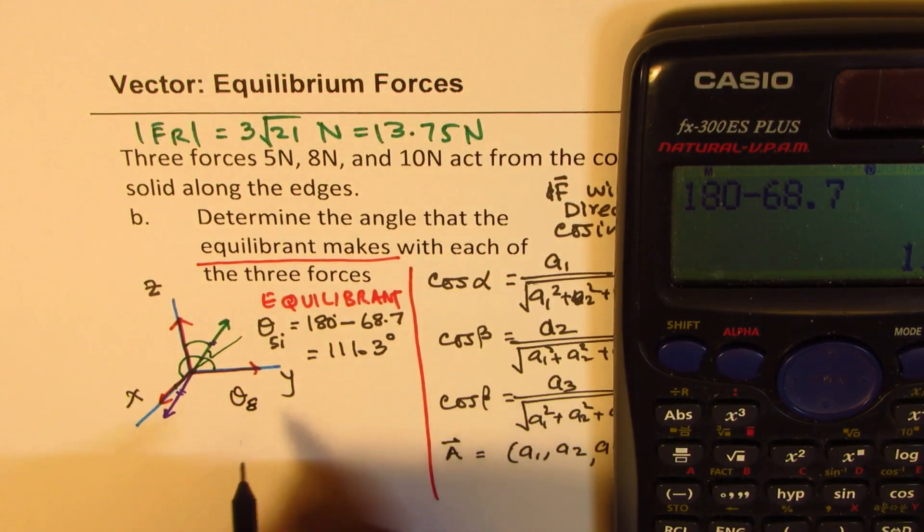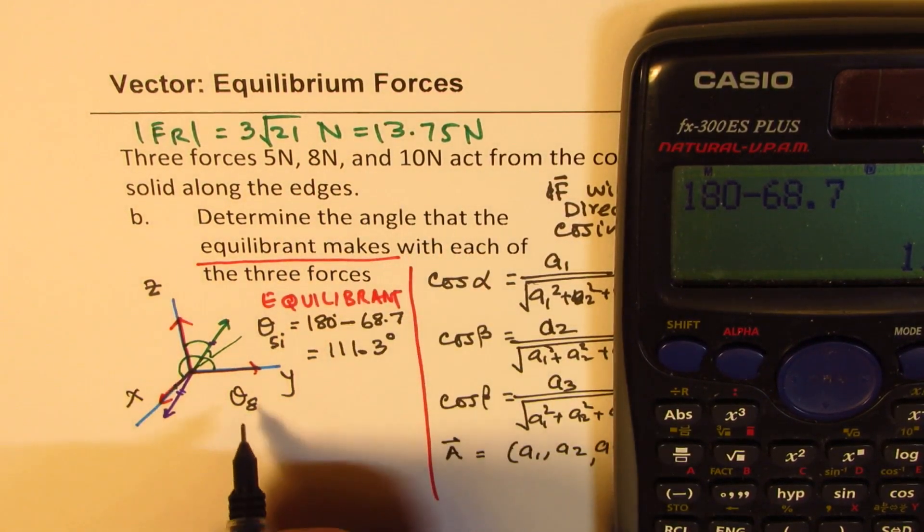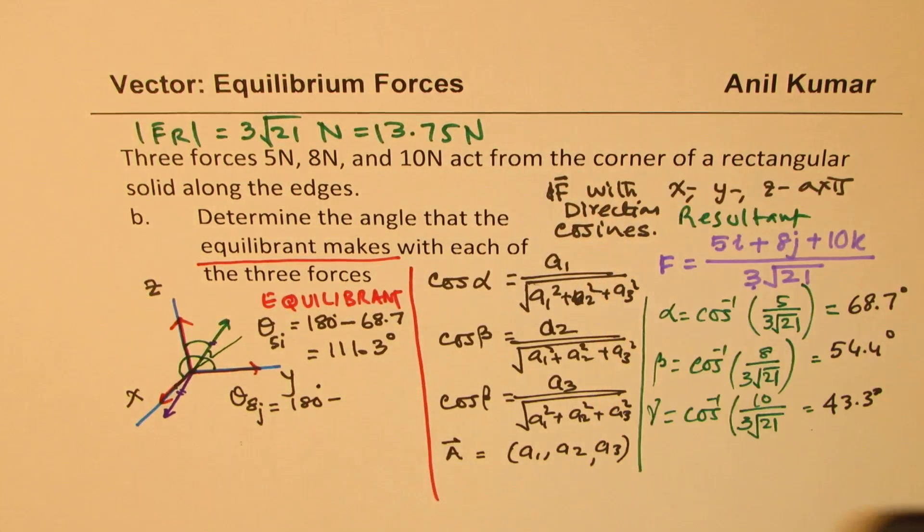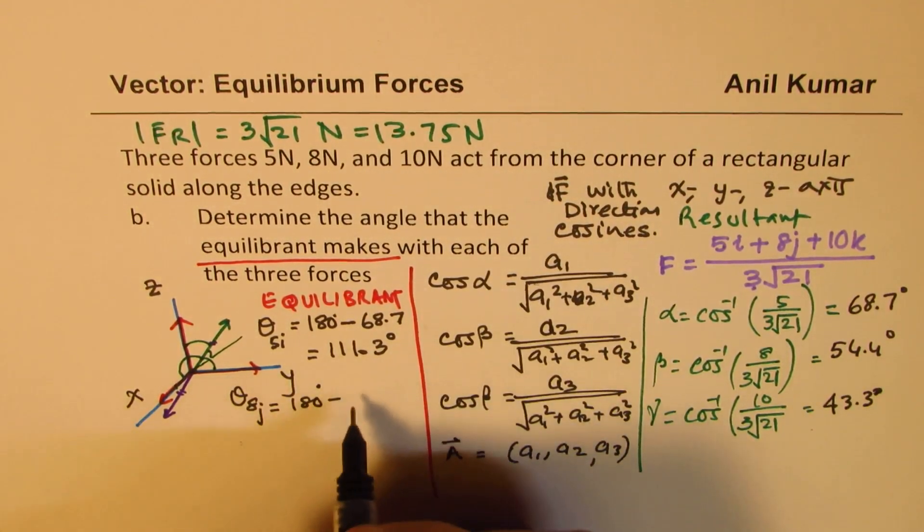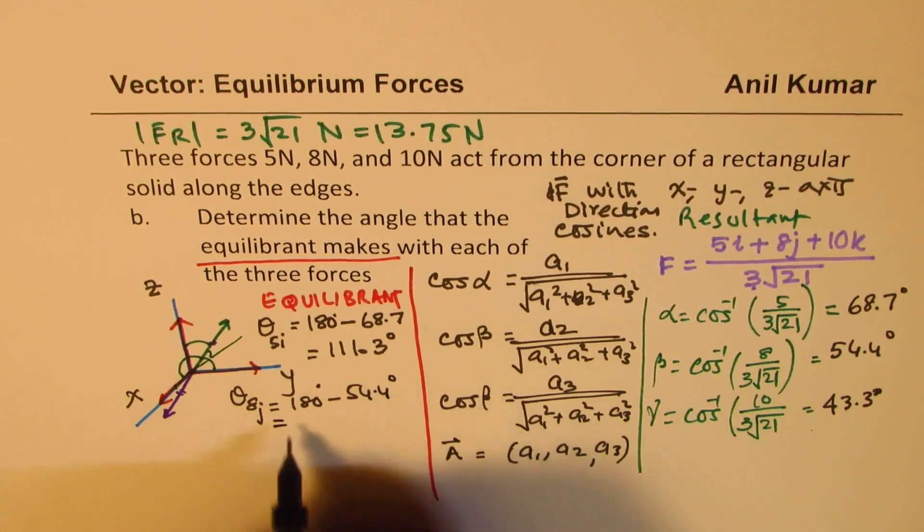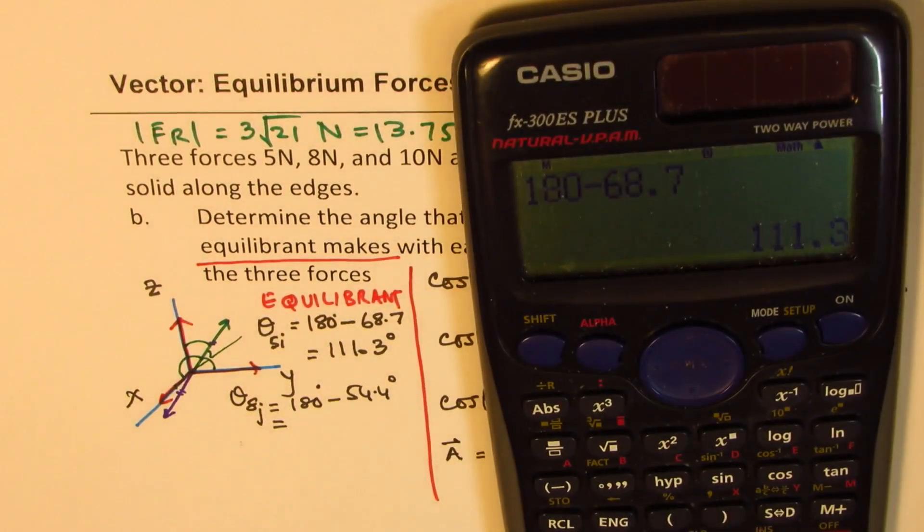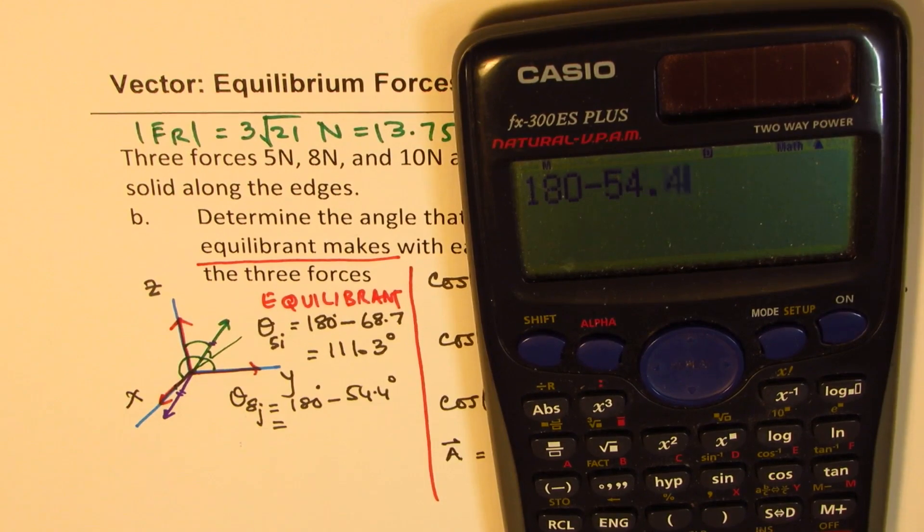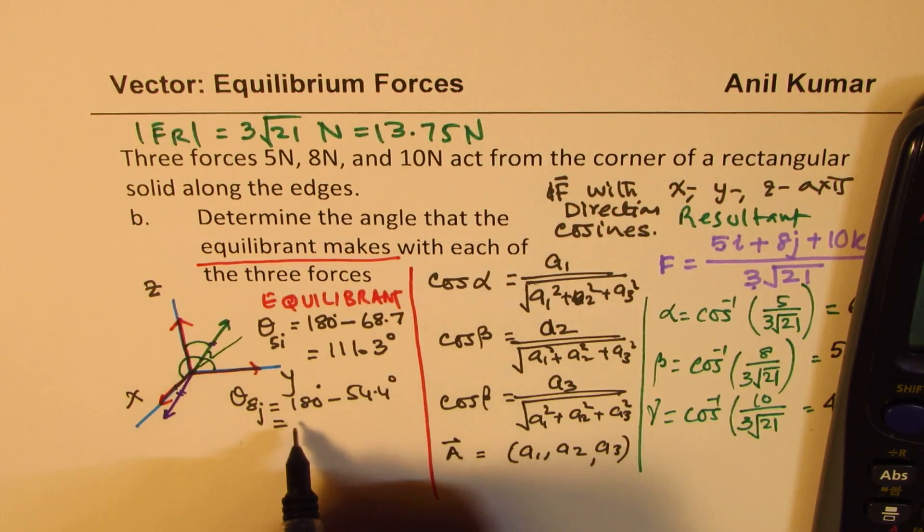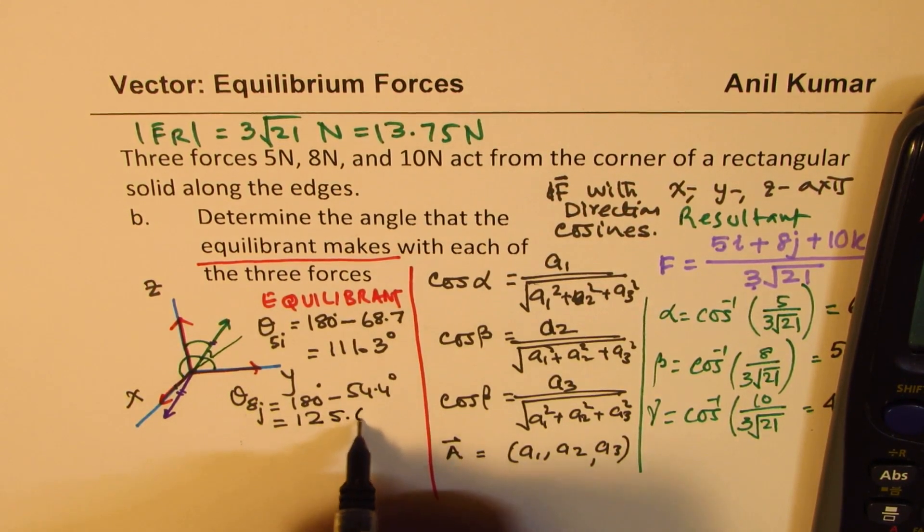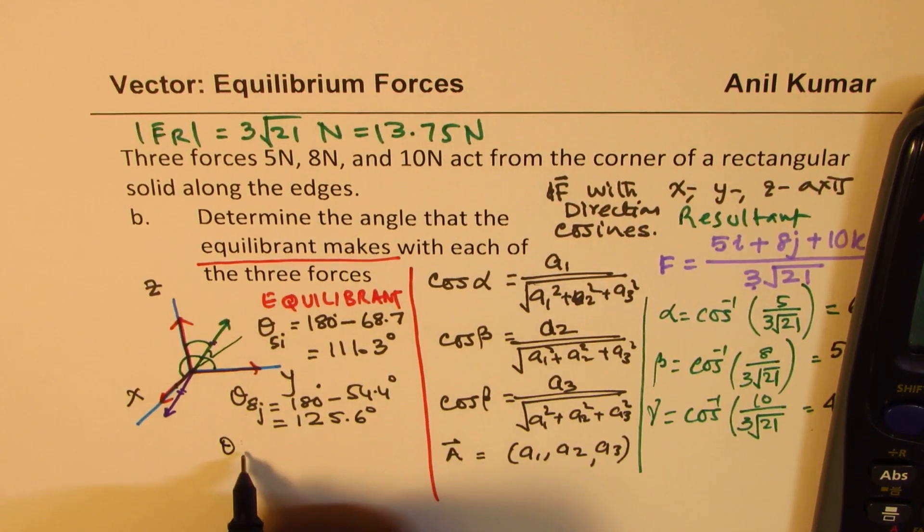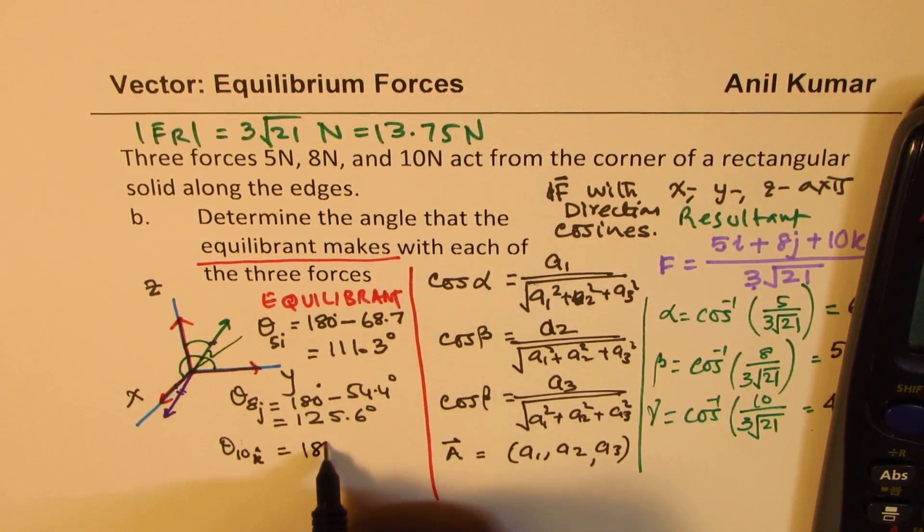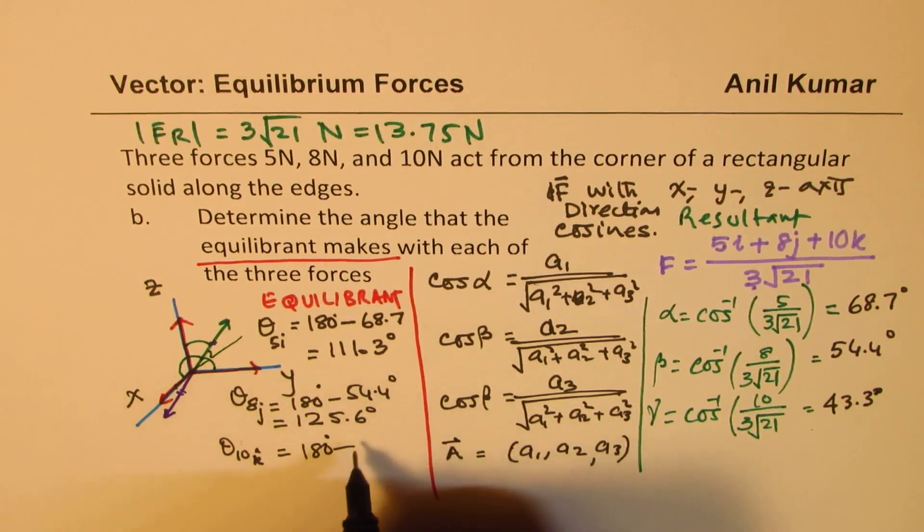Do you get the idea? So the second force is against the force of 8 newtons which is along the J direction. It will be 180 degrees minus beta which is 54.4. So let's figure this out. 180 minus 54.4 equals to 125.6.